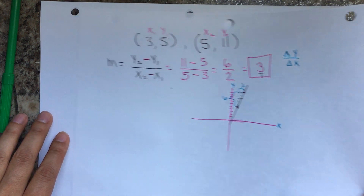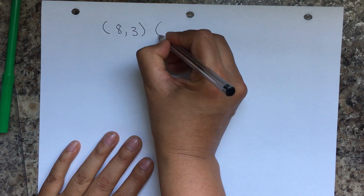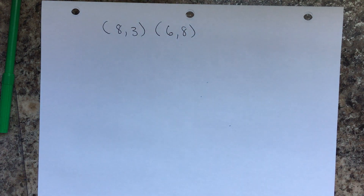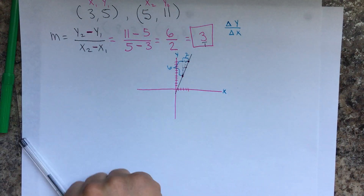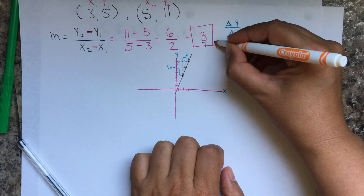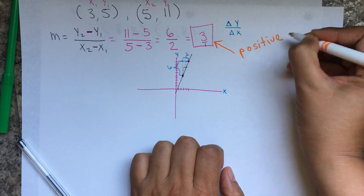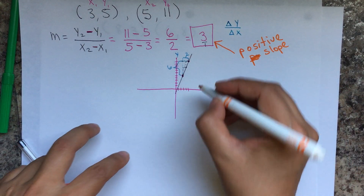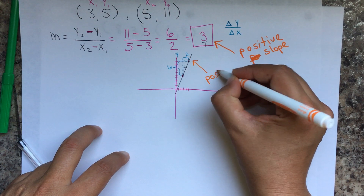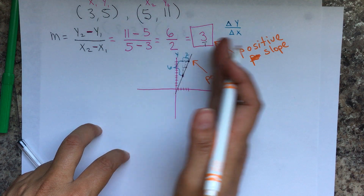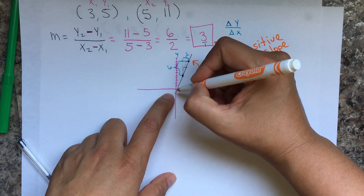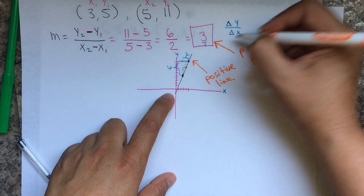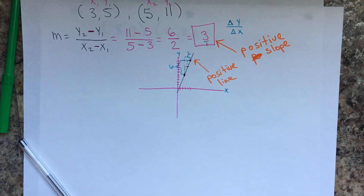Let's do another example with points (8,3) and (6,8). But first, notice the sign of the previous slope was positive. A positive slope gives a positive line — meaning from left to right, the line goes up, like when you're writing a letter and your writing moves upward.